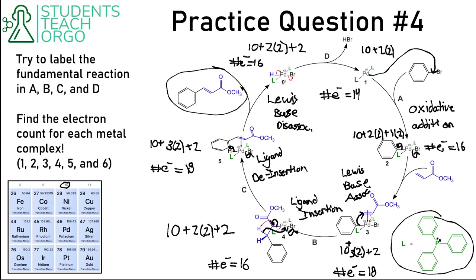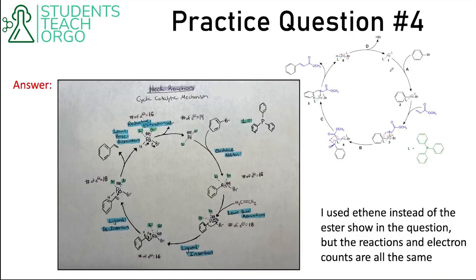Lastly, the reaction from 6 to 1 is an example of reductive elimination, because we're going from palladium +2 back to the ground state of palladium. It's almost like we're removing the palladium from in between the bromine and hydrogen to create a hydrogen-bromine bond. That was a lot of drawing and probably wasn't super clear, so I drew it out in a much neater version using ethene instead of ethene with the ester attached, but all of the reactions are the same — this version is just more visually appealing.